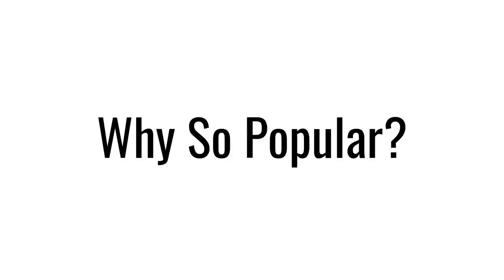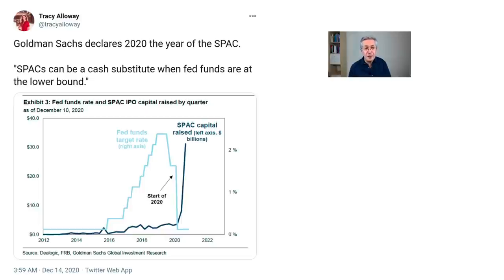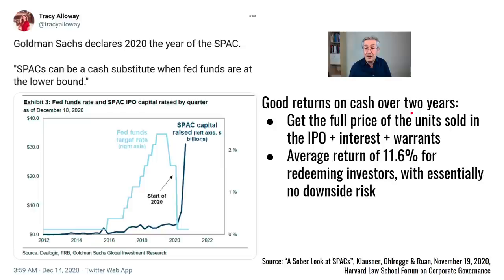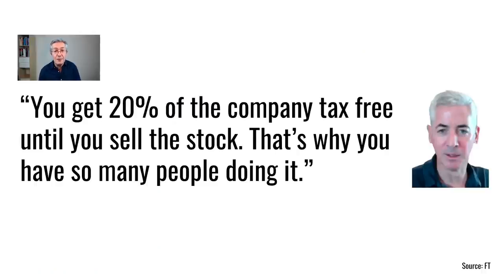So given these issues, why are SPACs so popular? Goldman Sachs says 2020 is the year of the SPAC, noting they can be a cash substitute when Fed funds are at the lower bound — i.e., zero. With extremely low interest rates, people seek other ways to generate returns. Based on the 'Sober Look at SPACs' paper, investors get the full price of units plus interest and potentially valuable warrants, with average annualized returns of just under 12% before the merger. As Bill Ackman notes: 'You get 20% of the company tax-free until you sell the stock' — that's those promote shares, which explains why so many people are doing it.